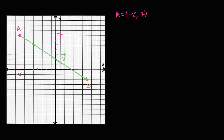And the point B, the terminal point of the vector, has the coordinates: X equals seven — counting: one, two, three, four, five, six, seven — comma, and then the Y coordinate is negative two. So B is seven, negative two.